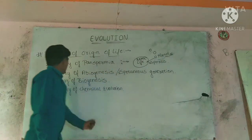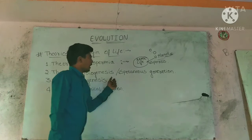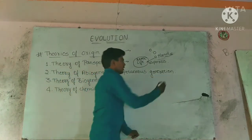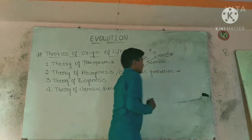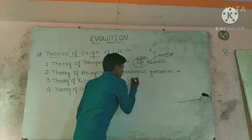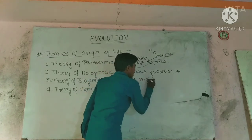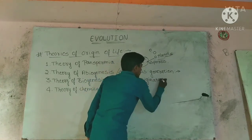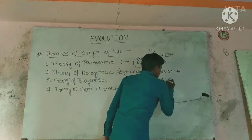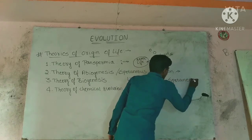Next, the Theory of Abiogenesis, also called Spontaneous Generation. This theory states that life originated spontaneously from non-living or inanimate matter.